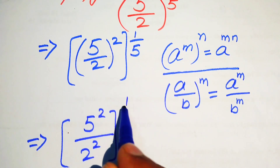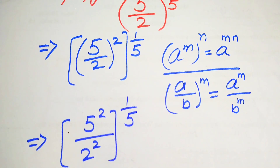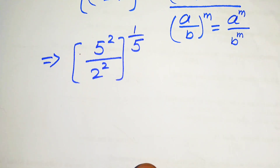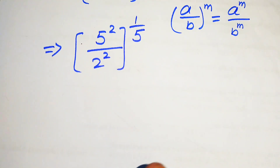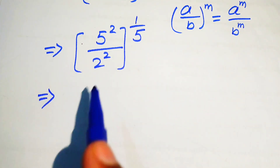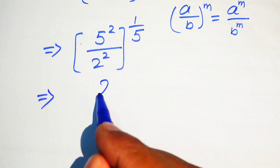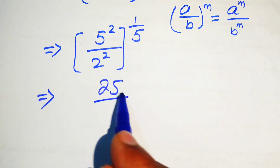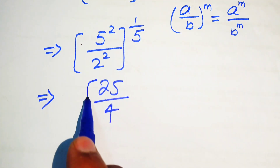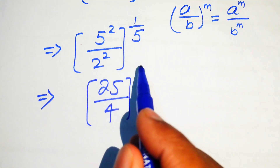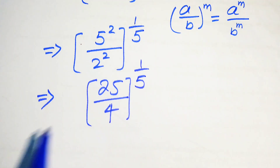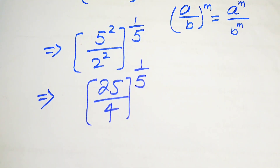It will be written as 5 squared divided by 2 squared, and its whole power is 1/5. Now we write 5 squared as 25 and 2 squared as 4, and its whole exponent is 1/5.